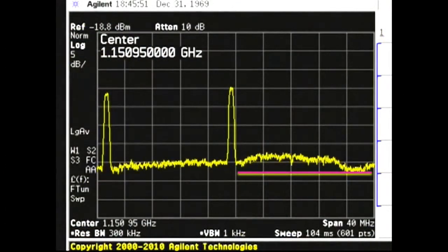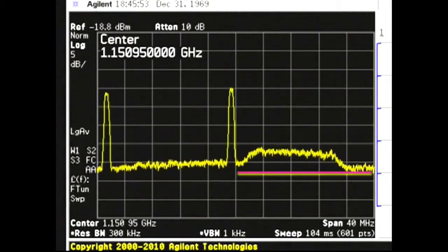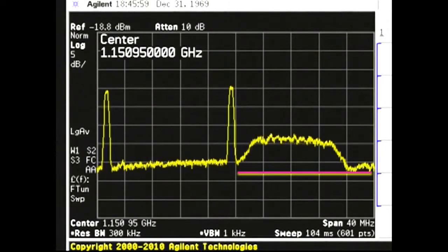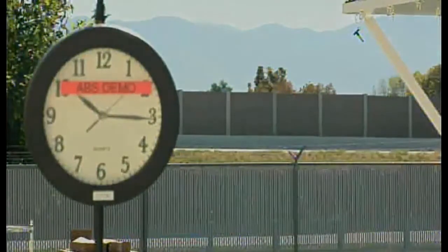The spectrum analyzer shows the rising noise floor of beam 2 as the aircraft transitions to that beam and the ABS software automatically changes frequency. As the aircraft completes the transition to beam 2, the live streaming video resumes.